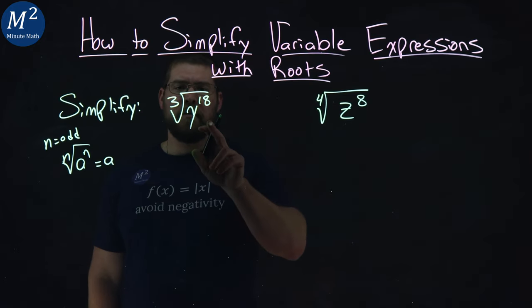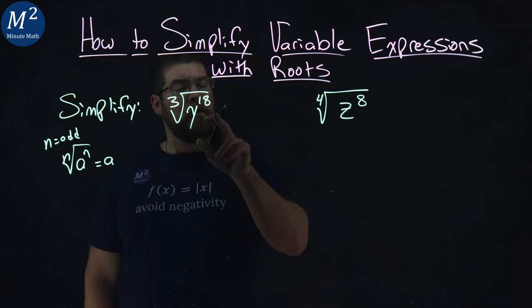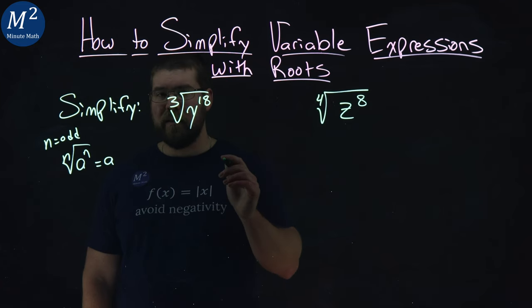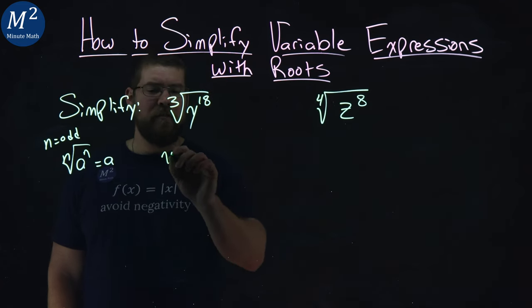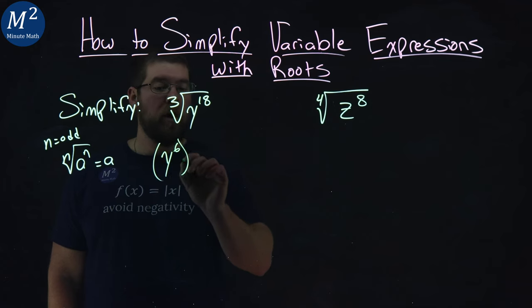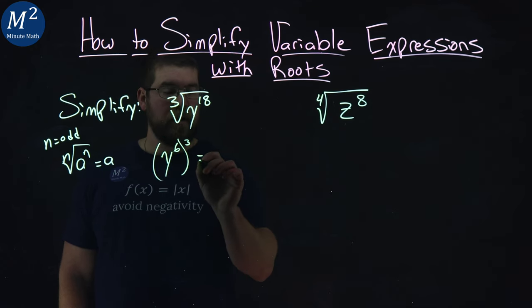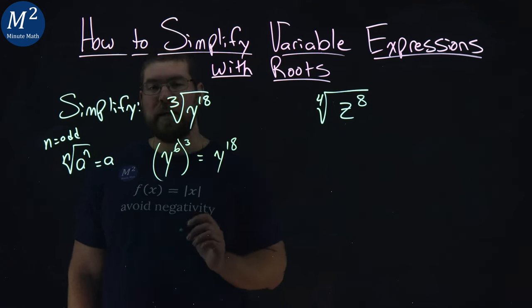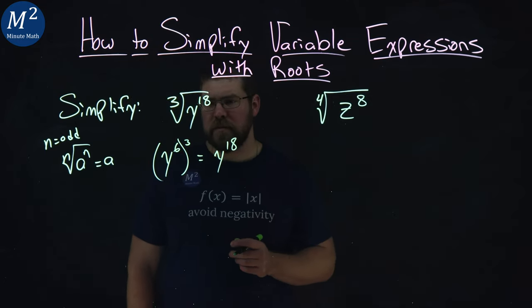From here, I really want to see what number to the third power gets me y to the 18th, and that actually is if I have y to the sixth power all to the third power, which gives me y to the 18th power, and this is another way, instead of our factor tree, to do this.